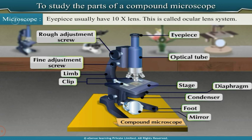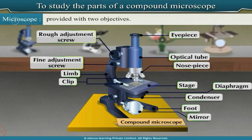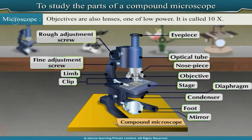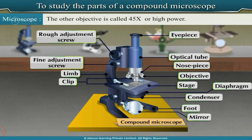The lower end of the optical tube carries a revolving nose piece provided with two objectives. Objectives are also lenses—one of low power, called 10x, and another called 45x or high power. Some microscopes may have 100x objectives too.